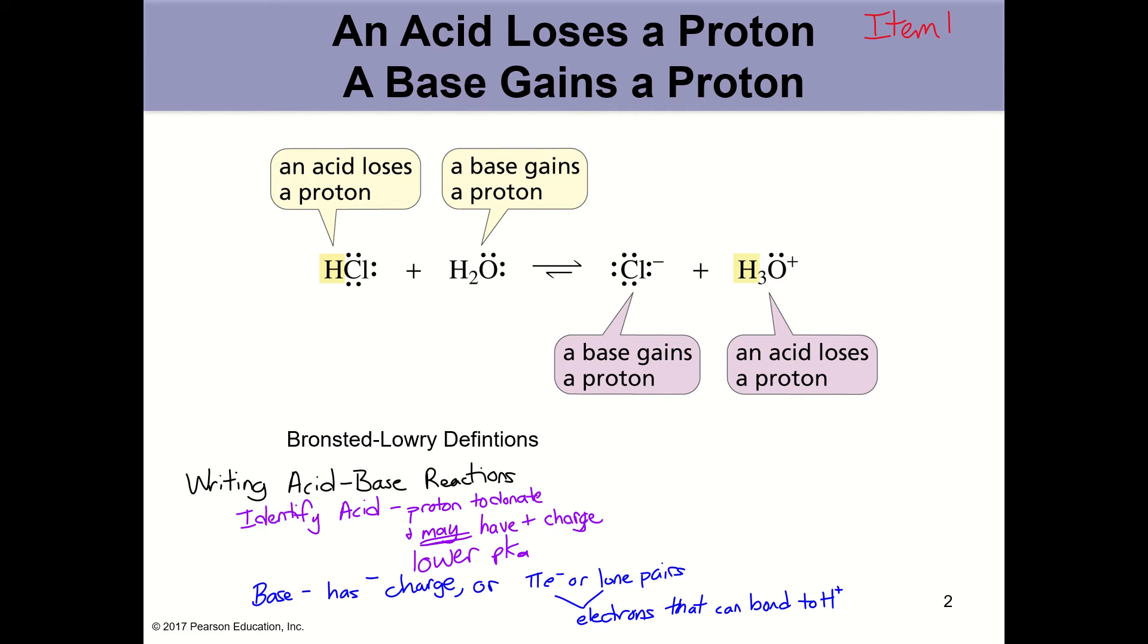Acids and bases, we know the Bronsted and Lowry definitions say that an acid loses a proton and a base gains a proton. To identify the acid with the Bronsted and Lowry definitions, we expect the acid to have a proton, and we expect the base to be capable of bonding to a proton. To make a bond, you need electrons, and so the base should have a lone pair or a pi bond that can then make a new bond.